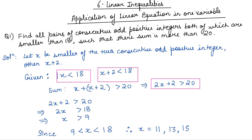Now, given that both numbers are less than 18, our first condition is x less than 18, and x plus 2 is also less than 18. And their sum is greater than 20, so x plus (x plus 2) is greater than 20, which gives 2x plus 2 is greater than 20. So these are the inequalities we need to solve to find x.